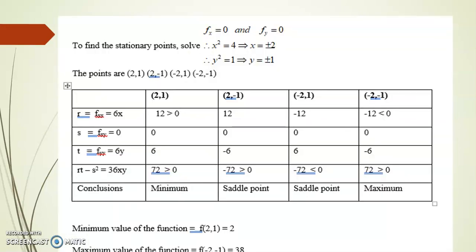Whenever the delta value is greater than 0, the point is either a maximum or minimum. Whenever the delta value is less than 0, the point is a saddle point. If the delta value is equal to 0, then the test is inconclusive.